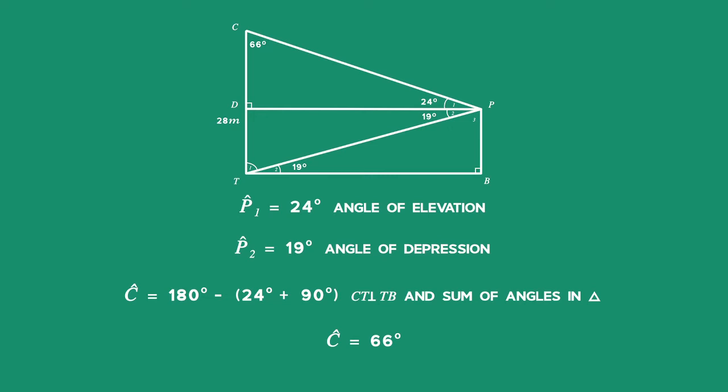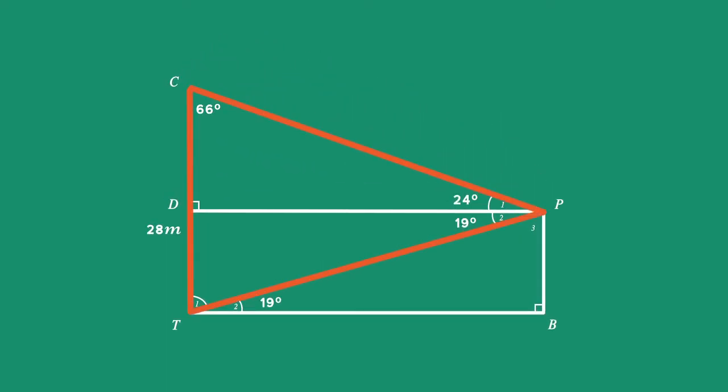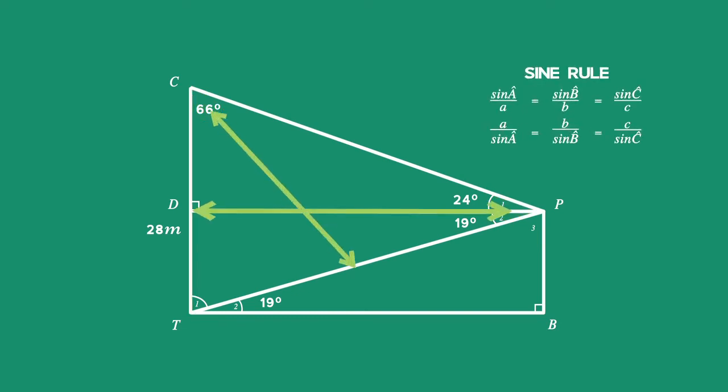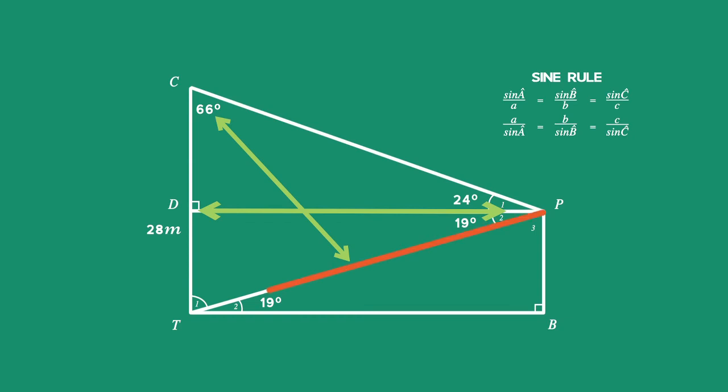Now focus on the bigger triangle CPT. Since we have two angles, C and P, and a known side, CT, we can use the sine rule to calculate the length of PT.